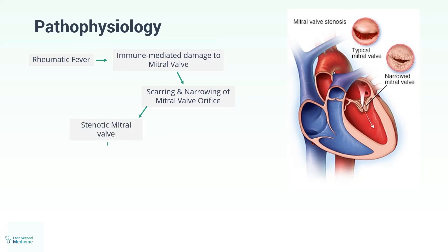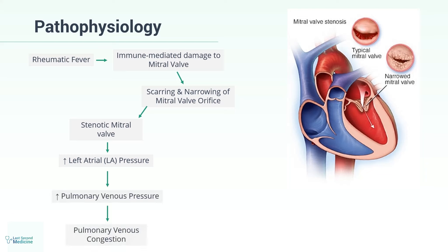A stenotic mitral valve results in elevated left atrial pressure and, as a consequence, elevated pulmonary venous pressure leading to pulmonary congestion. Anything that increases blood flow across the mitral valve, such as exercise or tachycardia, exacerbates the pulmonary venous hypertension and associated symptoms.